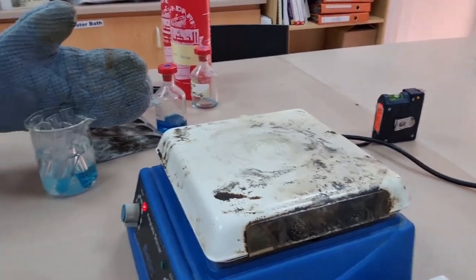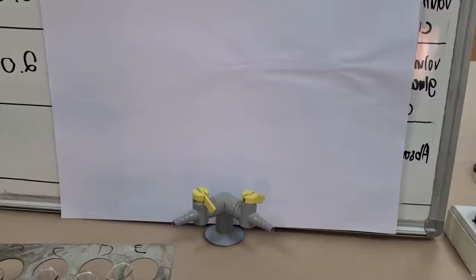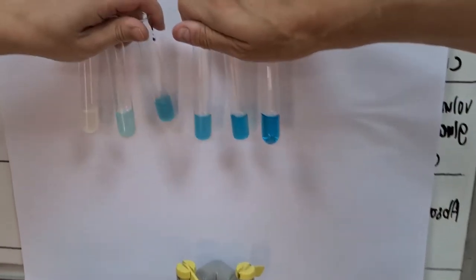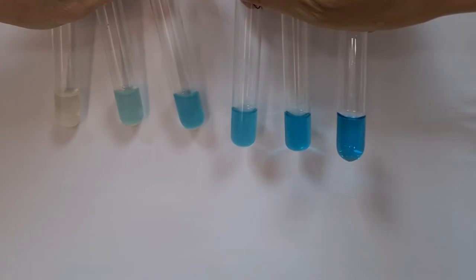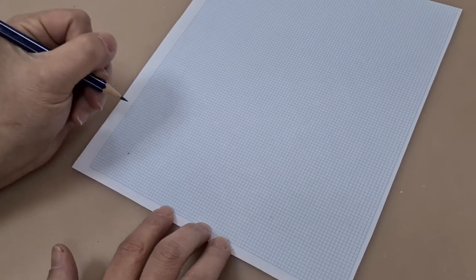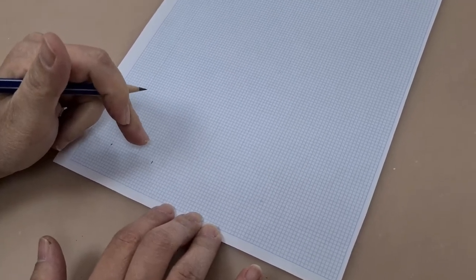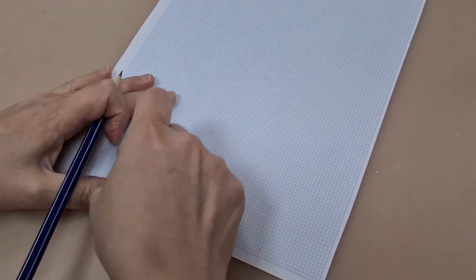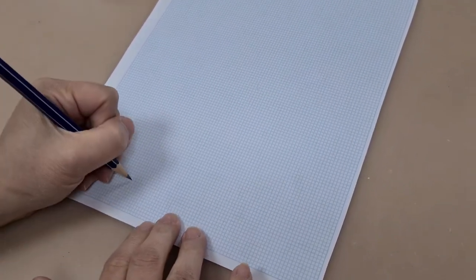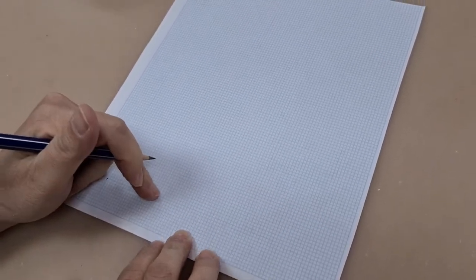We're now going to measure these in a colorimeter and plot the absorbance on the y-axis against concentration on the x-axis. We've measured the absorbance in the colorimeter and now we're going to plot the graph remembering the concentration of our knowns is going to go on the x-axis.